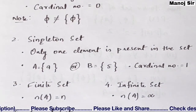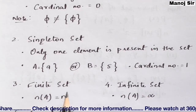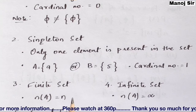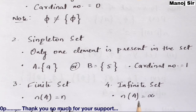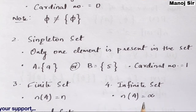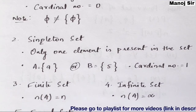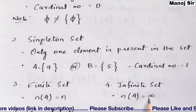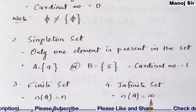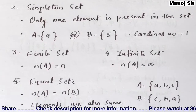The third and fourth types are finite set and infinite set. A finite set is one in which we can count the number of elements, and an infinite set is one in which we cannot count the elements. For a finite set, the cardinal number n is countable, and for an infinite set, the cardinal number is infinity, which is uncountable.